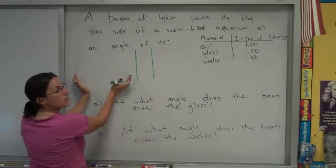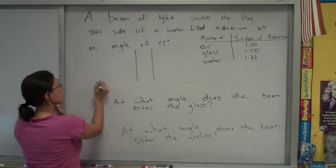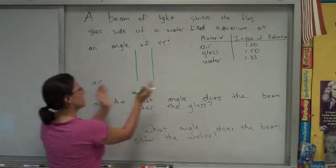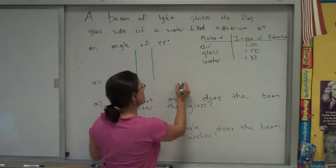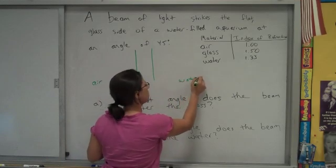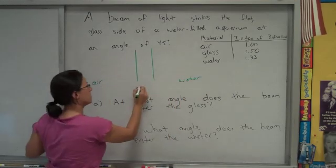And so we can imagine that out here is outside of the aquarium. This is where the air is. In here is inside the aquarium. This is where the water is. And this is that side of the aquarium. This is the glass.